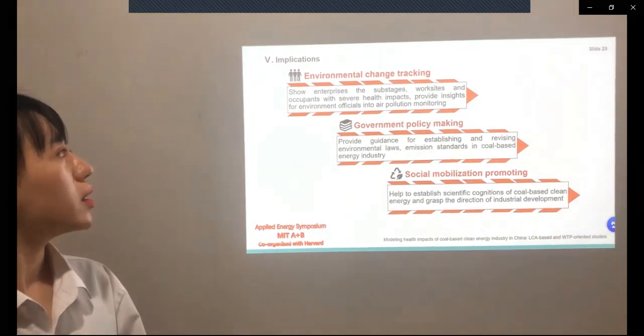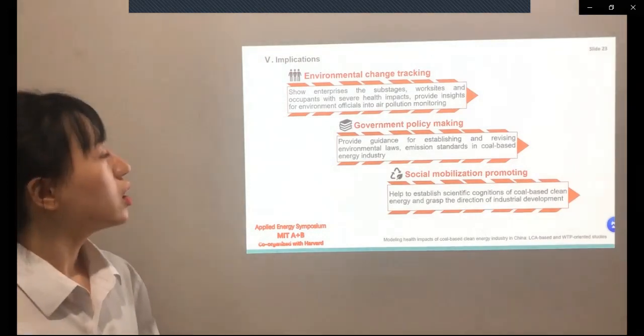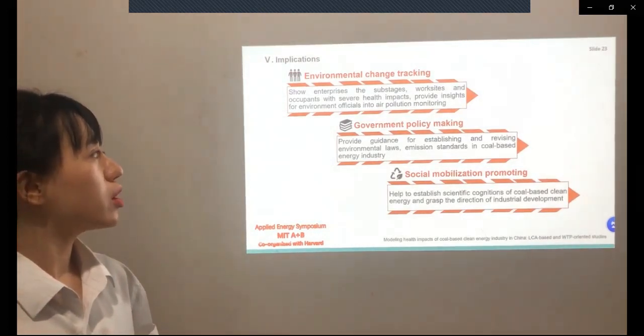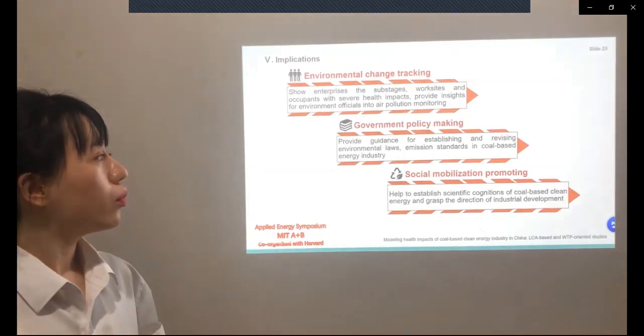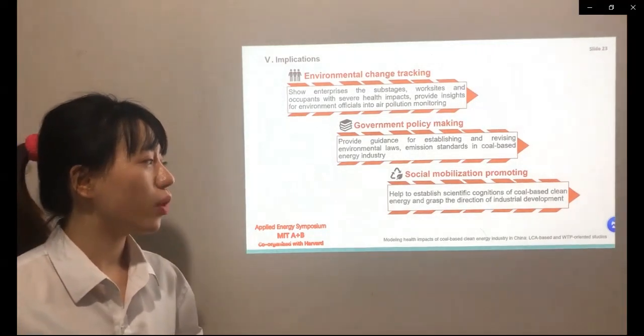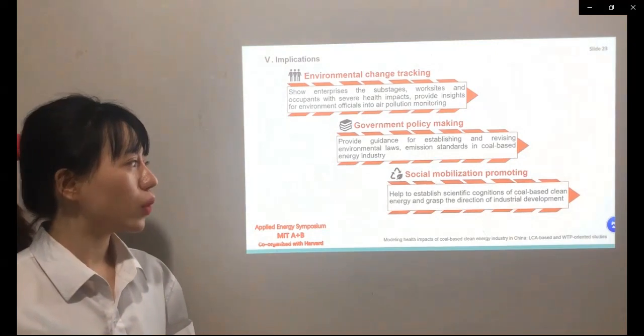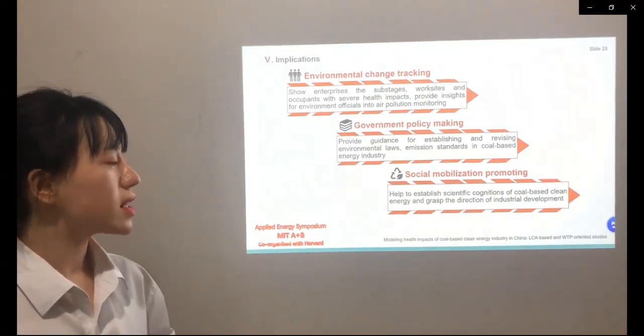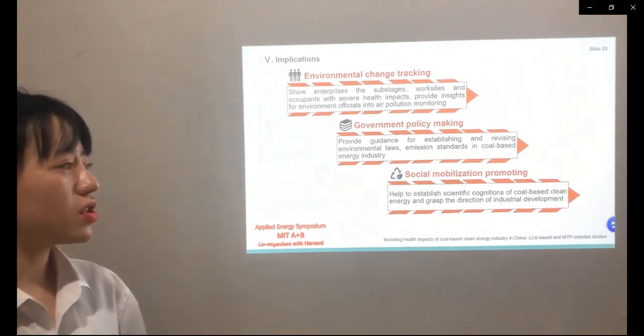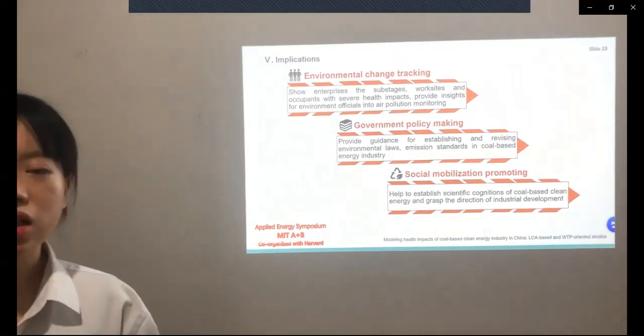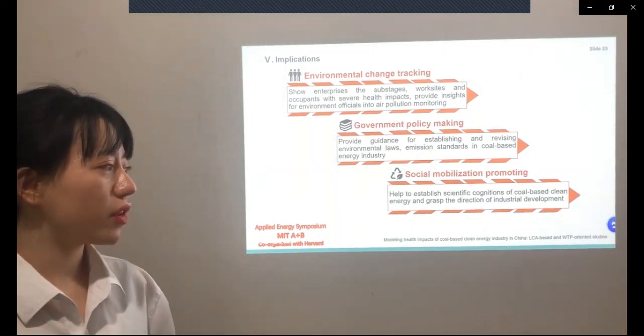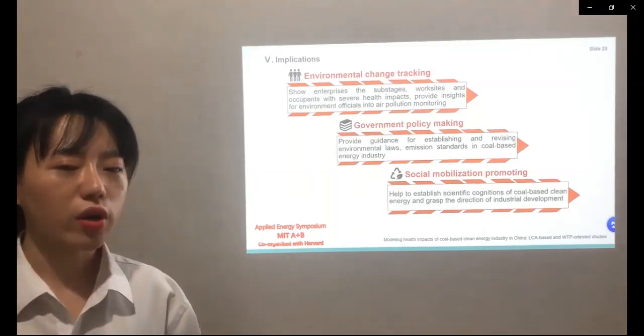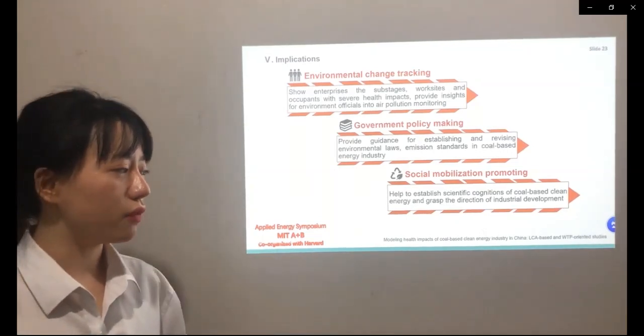Health impact models can compare the severity of health damages on the same scale, which makes the results more visible and accessible. Willingness to pay and disability adjusted life years represent economic loss and health loss respectively. It is more intuitive and understandable than individual health risk values. Overall, there is strong reason to believe that our model is meaningful both in practical and theoretical aspects. Thus, I will propose our implications from three aspects. First, environmental change tracking. Our research can show enterprises, sub-stages, and occupations with severe health impacts and provide insights for air pollution monitoring. Second, government policy making. We believe our results will provide guidance for establishing and revising environmental laws and emission standards in the energy industry. The last one is social mobilization promoting. Our research can investigate the effectiveness of coal-based clean energy industry, which can help to establish scientific combinations of coal-based clean energy and help related companies to make decisions of industrial development.